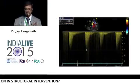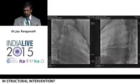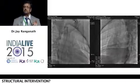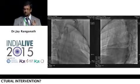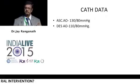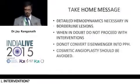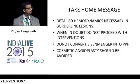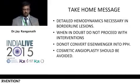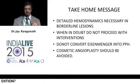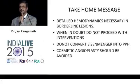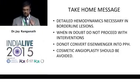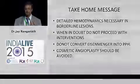There's another boy — gradient of 38–40 on echocardiography. Angiographically it looks like quite significant coarctation, but the hemodynamic gradient is much less. Detailed hemodynamics is necessary in borderline lesions. When in doubt, do not proceed with the intervention. Do not convert Eisenmenger physiology into pulmonary arterial hypertension, especially in ASD and PDA. Cosmetic angioplasty should be avoided as far as possible. Thank you.